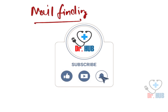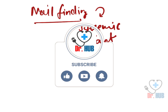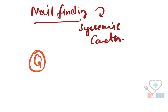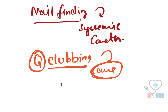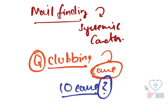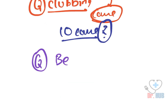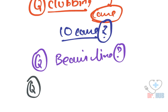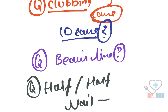We'll be looking at nail findings and the systemic conditions associated with specific nail findings. To start off with questions: What are ten causes of clubbing? Where is the Beau's line seen? In case of the half and half nail, what does it signify? We'll answer all these questions in this video.